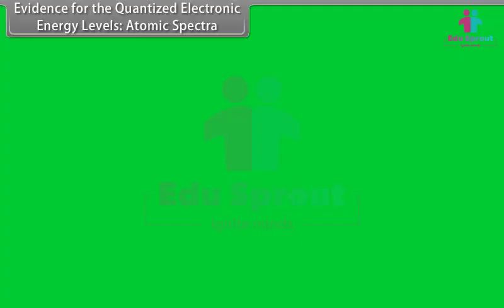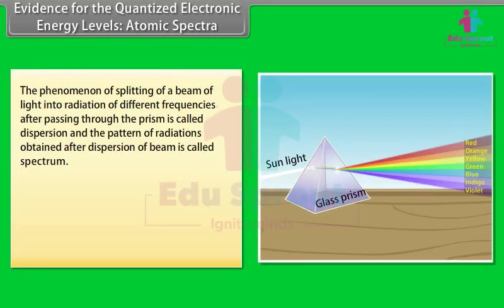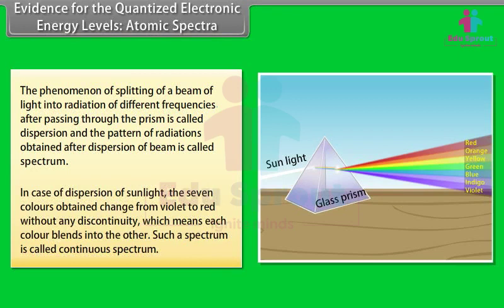Evidence for quantized electronic energy levels — Atomic spectra: The phenomenon of splitting of a beam of light into radiations of different frequencies after passing through a prism is called dispersion, and the pattern obtained is called a spectrum. In dispersion of sunlight, seven colors change from violet to red without discontinuity — each color blends into the next. Such a spectrum is called a continuous spectrum.